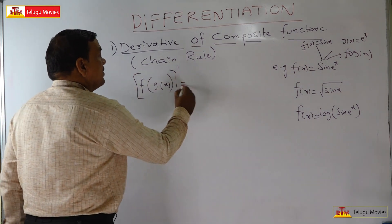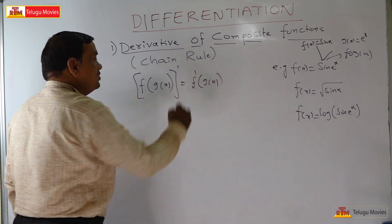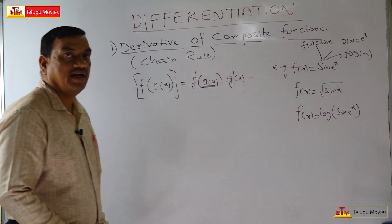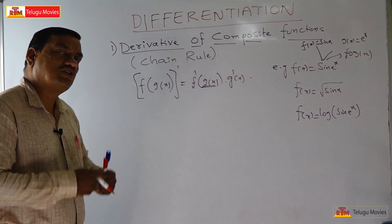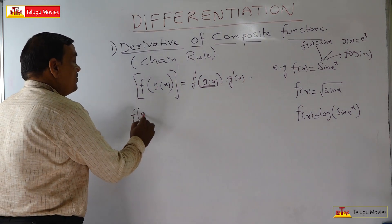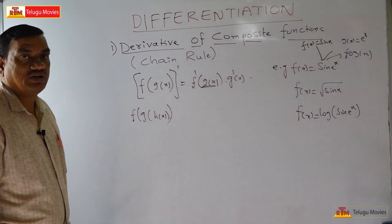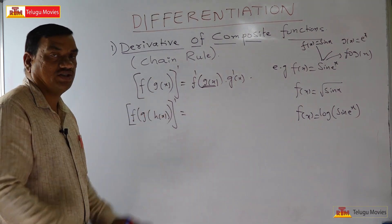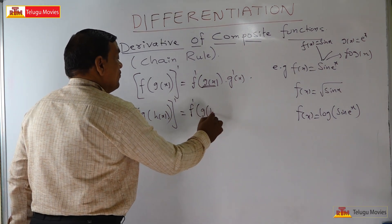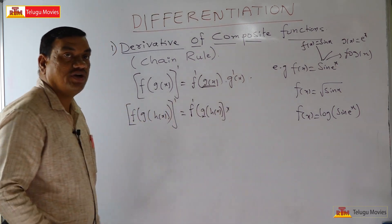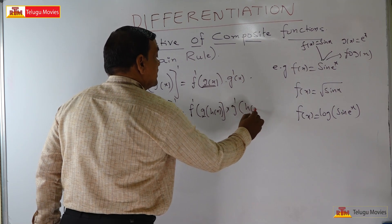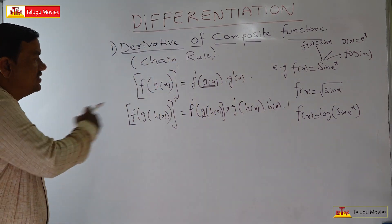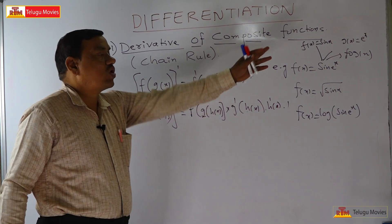First, find the derivative of the total function f of g of x, that is f dash of g of x. Again, find the derivative of g of x, that is g dash of x. For example, if f of g of h of x is there, a composite function, the derivative is f dash of g of h of x, into g dash of h of x, into h dash of x. The derivative of x is 1, so no need to write that.